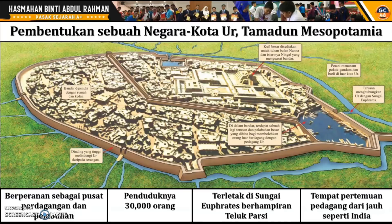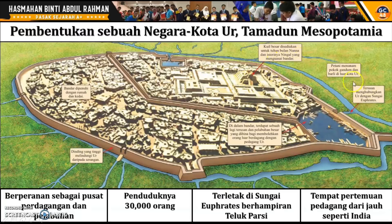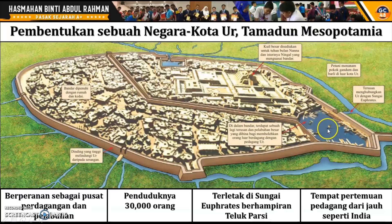Sebagai contoh, negara kota Ur dalam Tamadun Mesopotamia. Terdapat dinding tinggi yang mengelilingi Ur daripada serangan. Terdapat Zigurat sebagai pusat ibadah, iaitu kuil berhala yang disediakan untuk tuhan bulan Nana dan isterinya yang menguasai bandar. Aktiviti pertanian dilakukan di luar bandar, berdekatan dengan sumber air. Terdapat terusan yang menghubungkan Ur dengan Sungai Euphrates. Di dalam bandar pula terdapat terusan dan pelabuhan besar yang membolehkan orang luar masuk untuk berniaga dengan pedagang Ur. Inilah ilustrasi yang menunjukkan negara kota Ur.